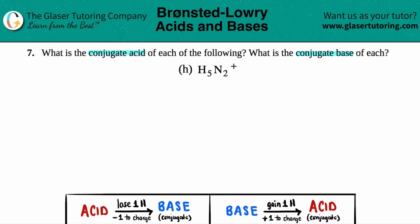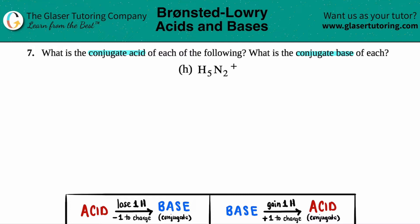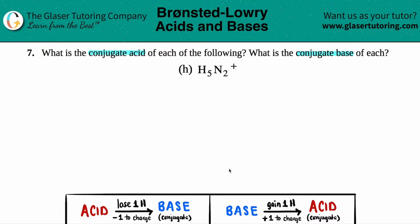Since we can find both the conjugate acid and the conjugate base from a single ion, that means that in certain situations this ion can act as an acid, and in other situations it can also act as a base. When you have an ion that can act as both an acid or a base, it's called an amphoteric ion or an amphoteric molecule. We'll see that in later questions, but as of right now we just got to find those conjugates.